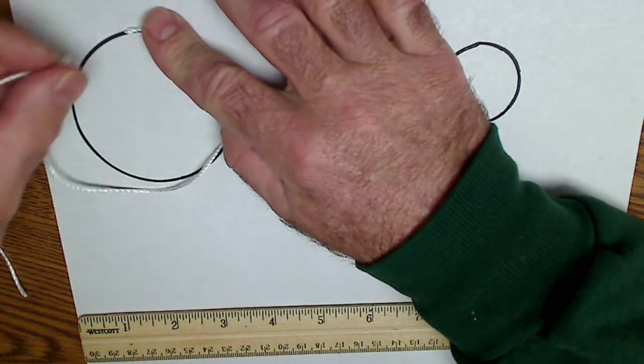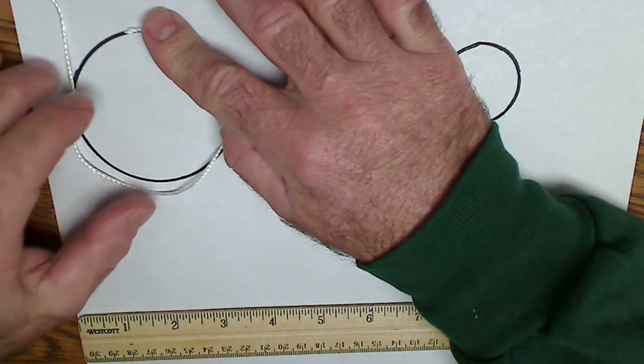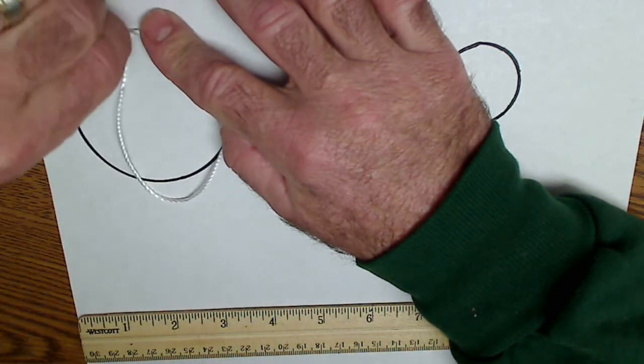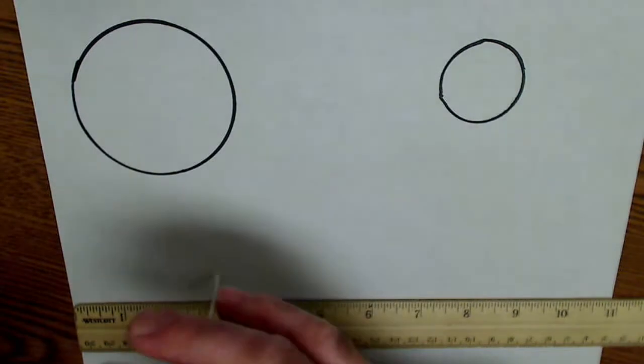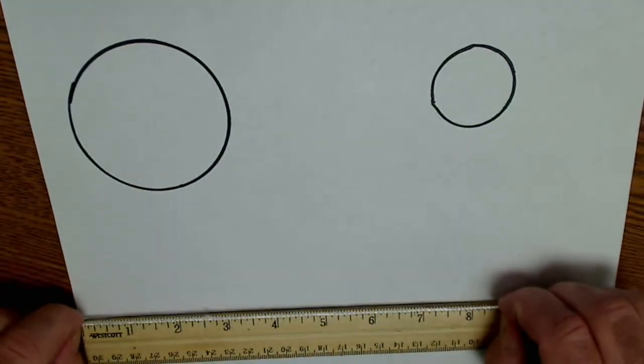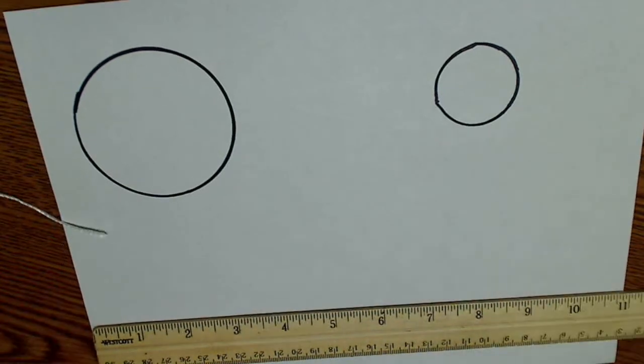Try and hold the string up to the circle, mark it, kind of a rough approximation. Now I pull the string tight on a ruler. It works out to be 8 5/8ths of an inch.